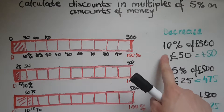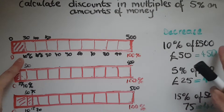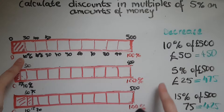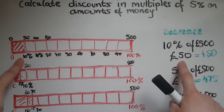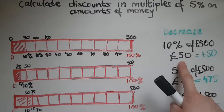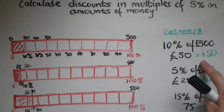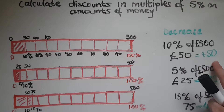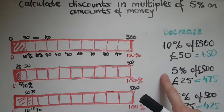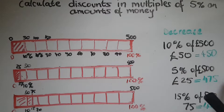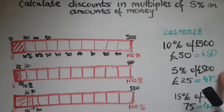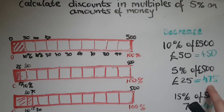We worked out 10 percent of 500, which was 50 pounds. So we take that away from the 500 to give 450 pounds. And if the discount is just five percent, then we take away five percent from the 500 pounds to give us 475 pounds.